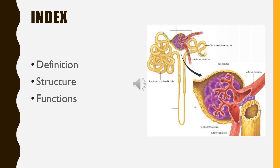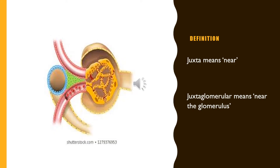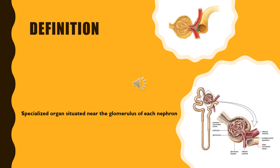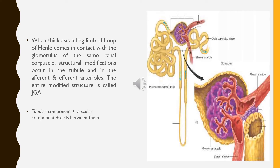This topic includes the definition, structure and functions of juxtaglomerular apparatus. The term 'juxta' means near, and so juxtaglomerular means near or next to the glomerulus. Thus, juxtaglomerular apparatus is a specialized organ situated near the glomerulus of each nephron.